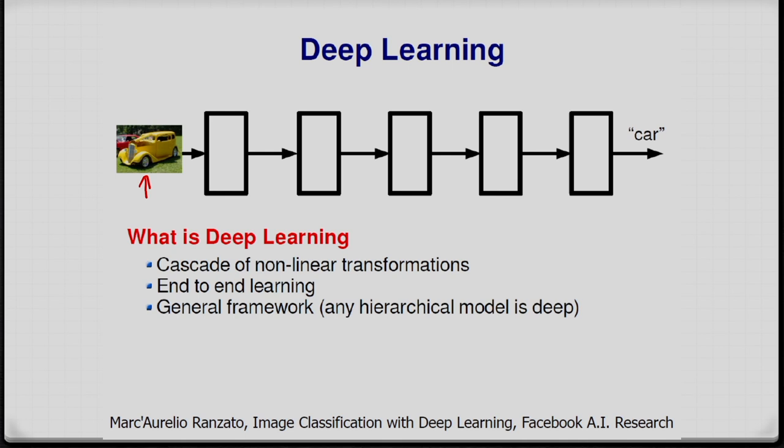It is nothing but a hierarchical model. If we consider traditional pattern recognition for object classification or image recognition, in the traditional approach we extract handcrafted features — like SIFT, HOG (histogram of oriented gradient), color features, and texture features — from the input image. After this, we apply supervised and unsupervised classification techniques such as k-means clustering or support vector machine for image classification.